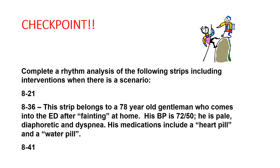Let's do a practice session. Pause the video and complete rhythms 821, 836, and 841. For strip 836: this belongs to a 78-year-old gentleman who comes into the ED after fainting at home. Blood pressure is 72 over 50. He is pale, diaphoretic, and dyspneic, and his medications include a heart pill and a water pill. Then resume the video to review.